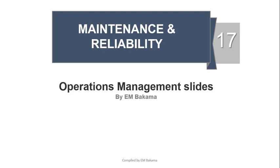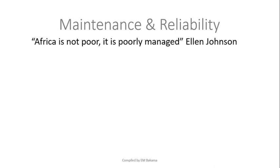We're talking about maintenance and reliability. Ellen Johnson, I think the Liberian president, said in 2007 something like 'Africa is not poor, it is poorly managed.' The reason behind this statement leads me to talk about maintenance and reliability — today in Africa we believe that you just need to build a nice hospital or a nice road and everything would be fine, like developed countries, but we forget that it's mainly about management rather than engineering.